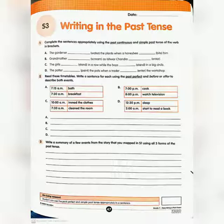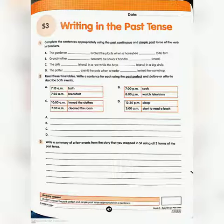Complete the sentences appropriately using the past continuous and simple past tense of the verb in brackets. The gardener was watering the plants when a honeybee bit him — bracket mein water diya huwa tha, bite ki second form bit. Grandmother was screaming as Ishwar Chandra entered. The girls were standing in a row while the boys stood in a big circle — stood is the second form of stand. The potter was painting the pots when a trader entered the workshop. Now read the timetables and write a sentence for each using the past perfect and before or after to describe both events.